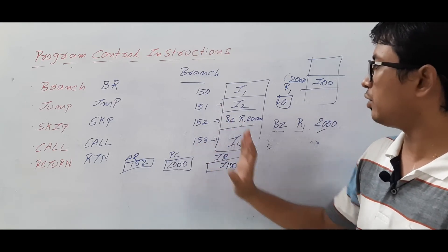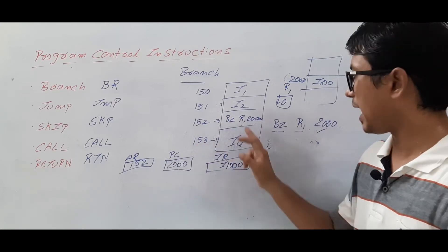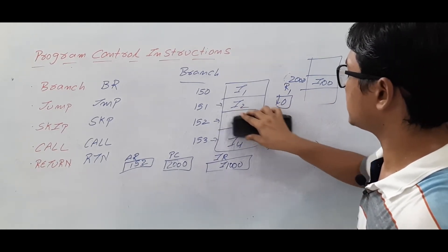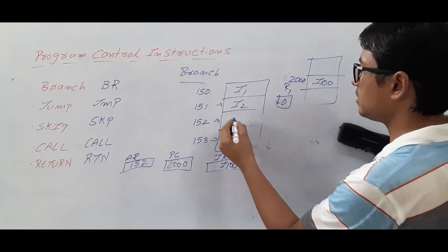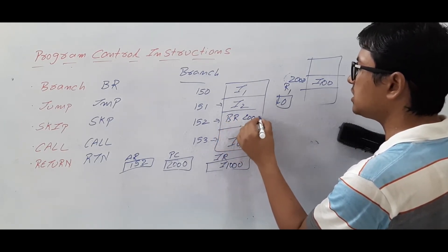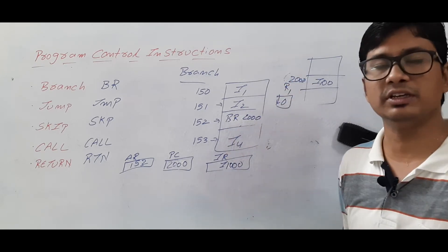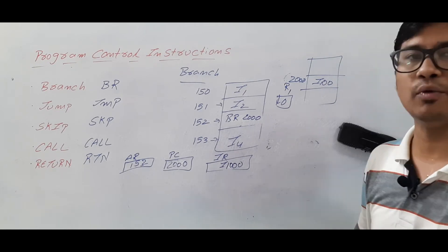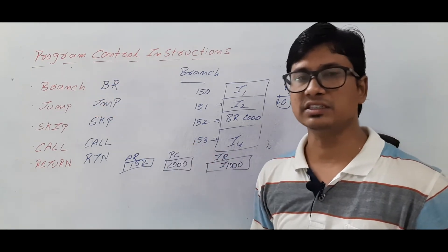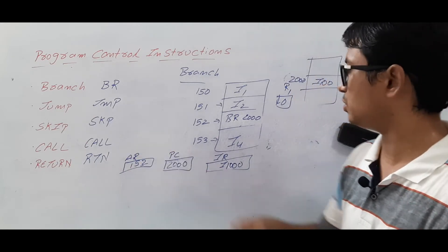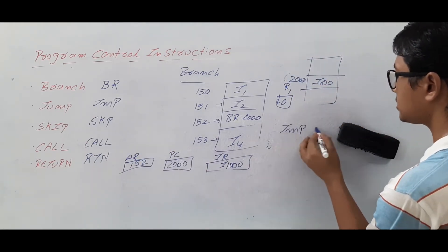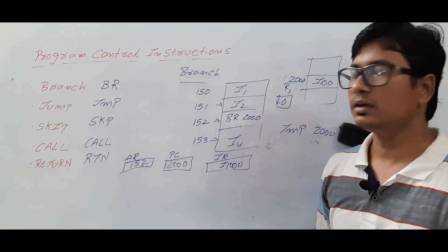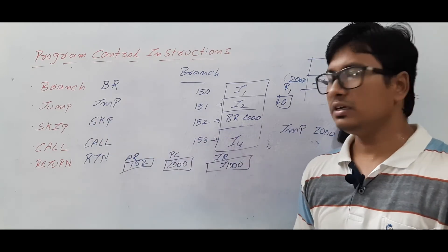So I hope you have understood the branch instruction. If it is an unconditional branch, you will not check any condition — directly the next instruction will be the one at address location 2000. Similarly, the jump instruction — JMP with some target location — will be executed the same way.